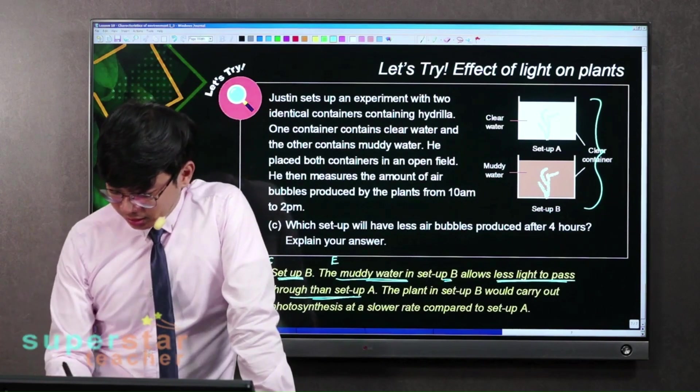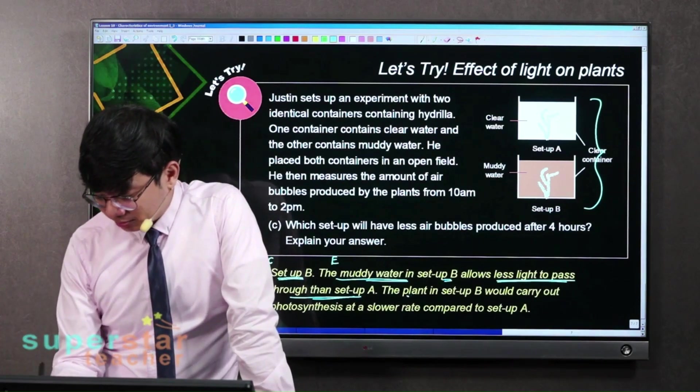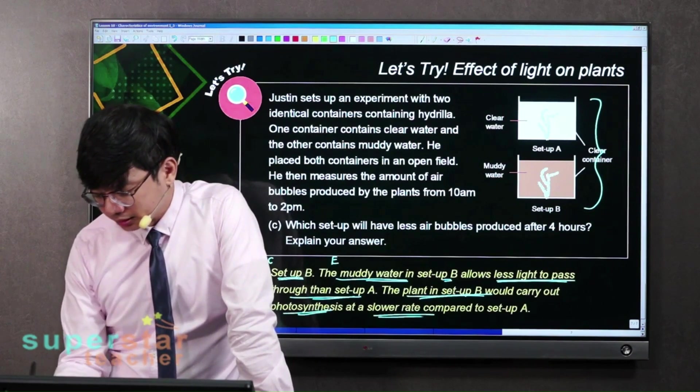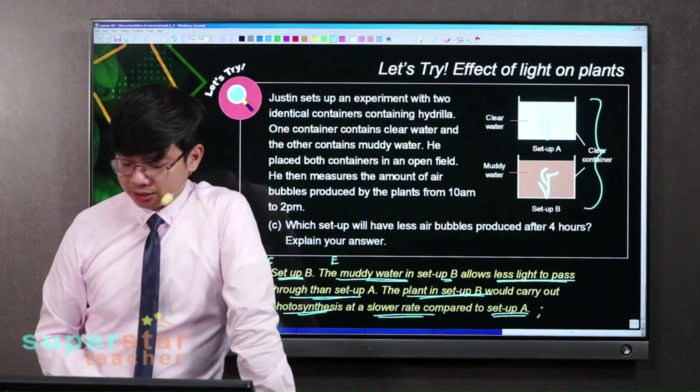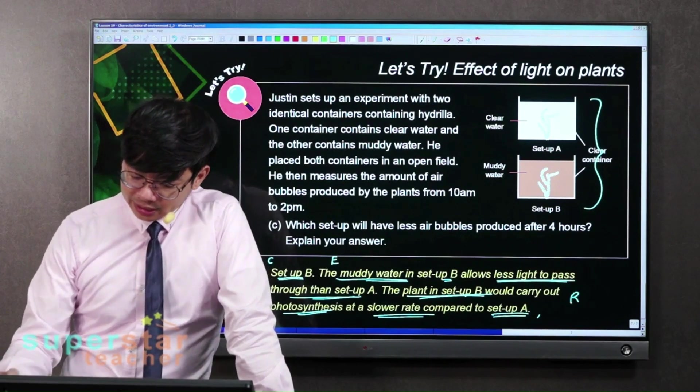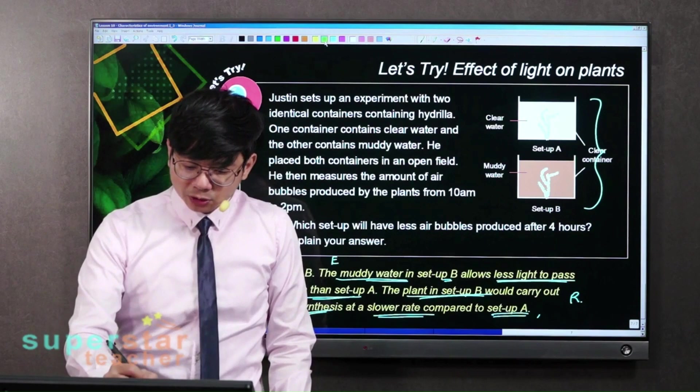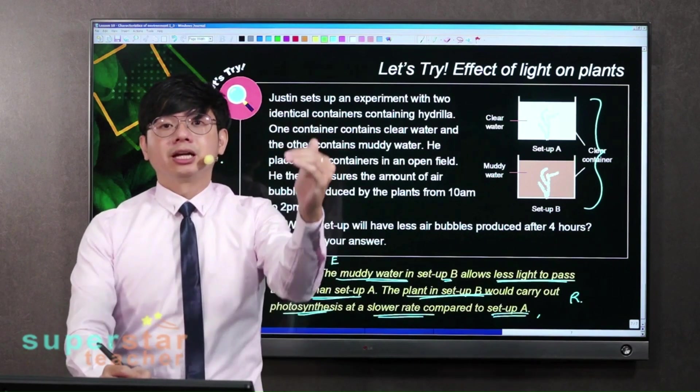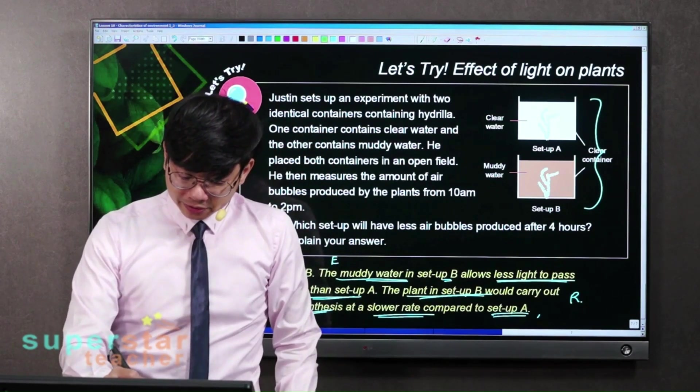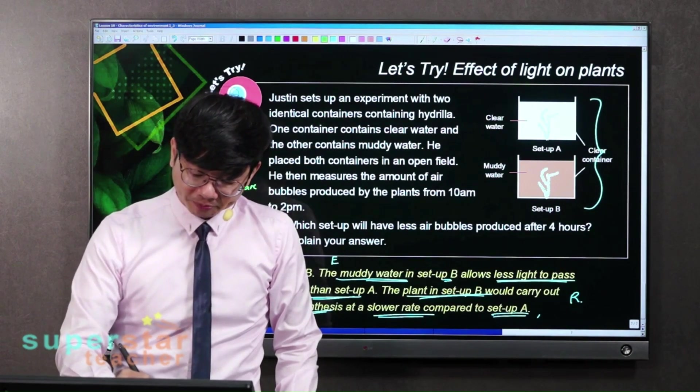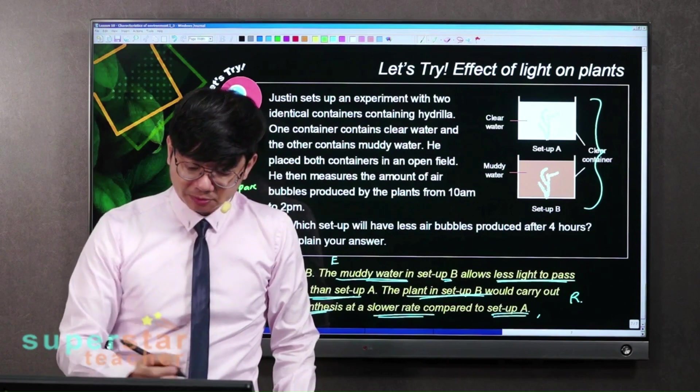Then you bring in the science concept. The plant in setup B will carry out photosynthesis at a slower rate as compared to setup A. So this is the reasoning. And guys, one more thing I want to highlight is that just like I told you that there is a TRACER, there is this term called compare before the CER.